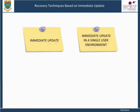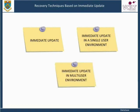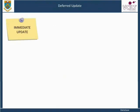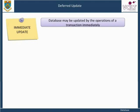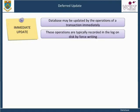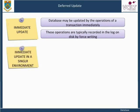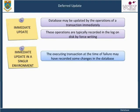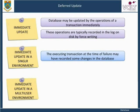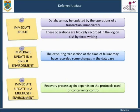Special procedures need to be put in place to effect recovery in cases where the database allows immediate update as opposed to deferred update. Immediate update: in the immediate update technique, the database may be updated by the operations of a transaction immediately, before the transaction reaches its commit point. However, these operations are typically recorded in the log on disk by force writing before they are applied to the database, so that recovery is possible. If a failure occurs in a single user system, the executing transaction at the time of failure may have recorded some changes in the database. When concurrent execution is permitted, the recovery process again depends on the protocols used for concurrency control.